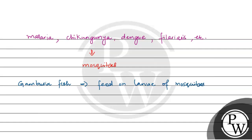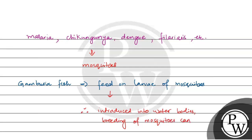Therefore, if Gambusia fish are introduced into the water bodies, the breeding of the mosquitoes can be controlled. When the breeding of the mosquitoes is controlled, the vector-borne diseases will also be controlled.